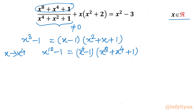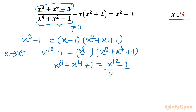I will divide both sides by x⁴ - 1, so I can collect the value x⁸ + x⁴ + 1. This value will be (x¹² - 1) / (x⁴ - 1), where x is not equal to 1. If you check the original equation, x is not equal to 1 here also.